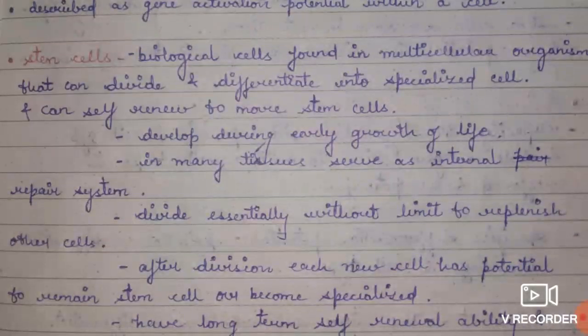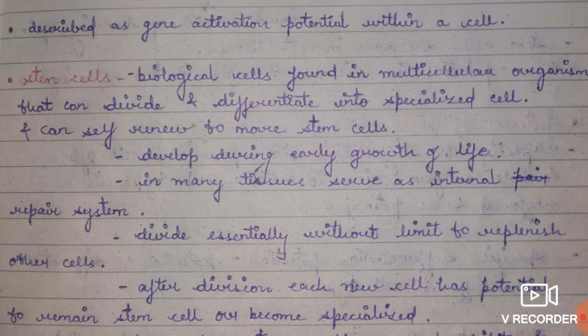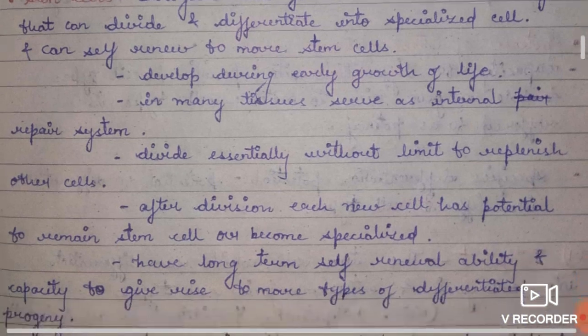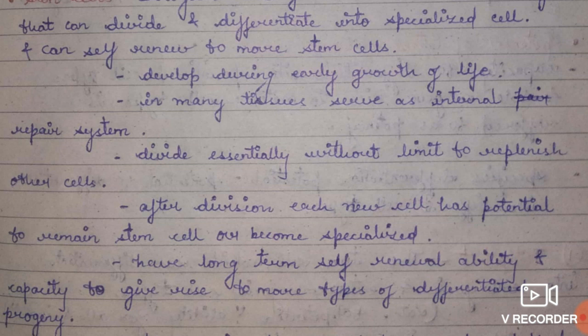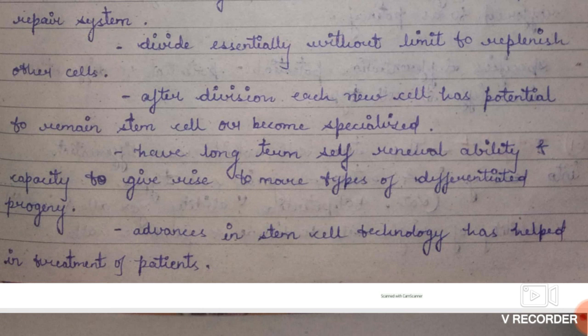The next term is stem cell. Stem cells are biological cells found in a multicellular organism which can differentiate, divide, and give rise to a large number of cells. They develop during the early growth of life, and in many tissues they serve as an internal repair system, dividing without limit to replenish other cells.